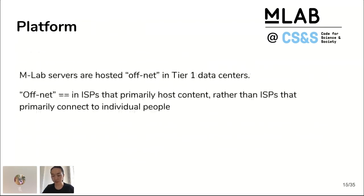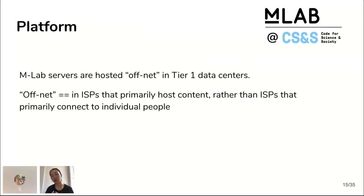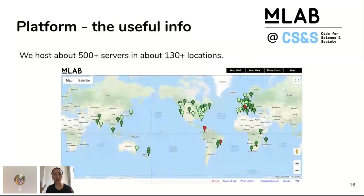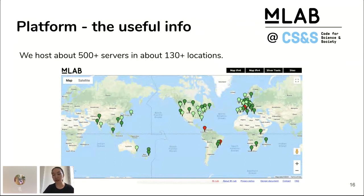The internet is big, so it's difficult to get a good-sized infrastructure that provides a valuable amount of information from different vantage points — that's what the MLab platform is trying to solve. We do this by hosting our servers in what we call off-net tier-one data centers. By off-net, we mean ISPs that primarily host content versus primarily connecting to individual people. We host our servers in about 130 plus locations and have a little over 500 of them, providing researchers a resource where they can host experiments that get a wide breadth of information about the internet.